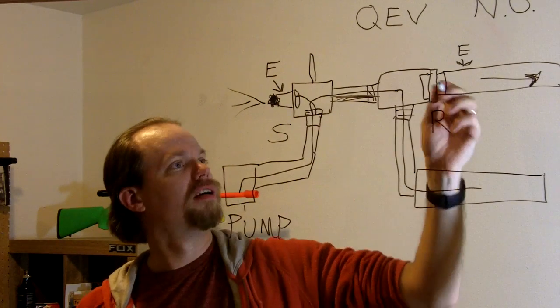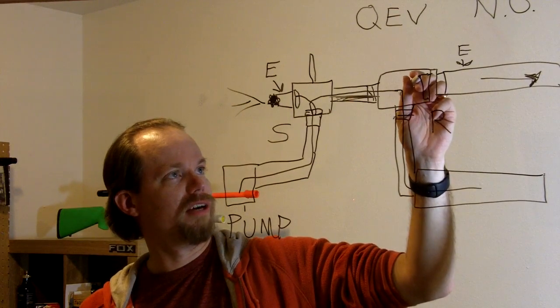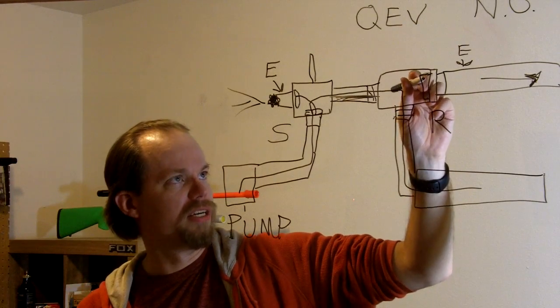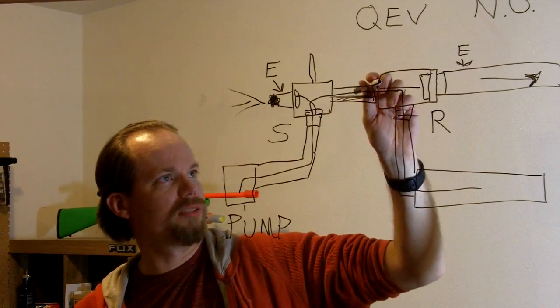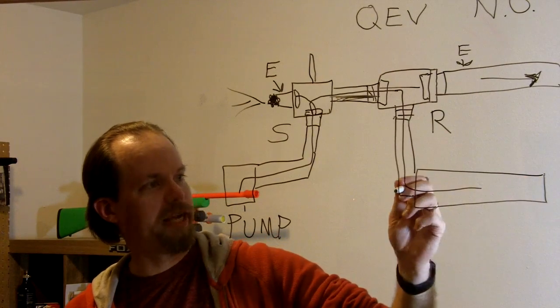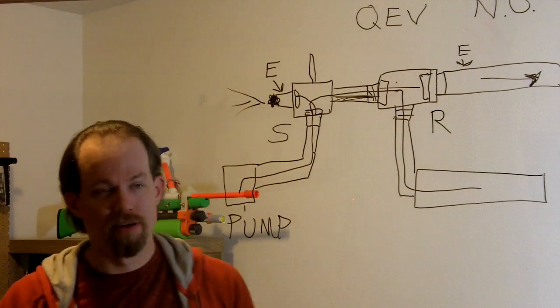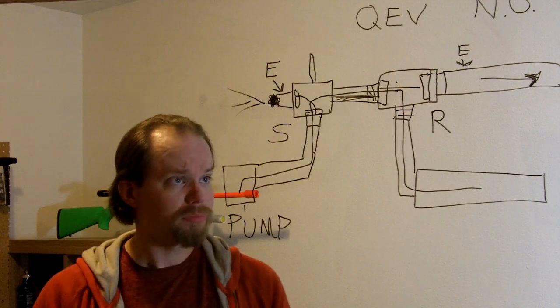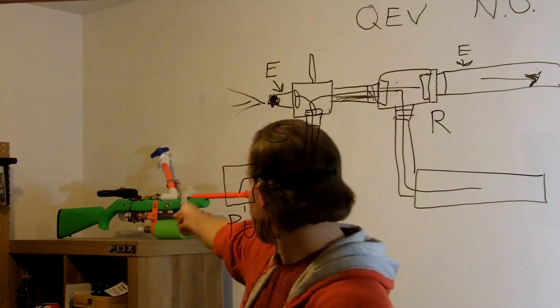Well when that happens, when this pressure drops, this biased shuttle valve, AKA QEV, slams closed this way and blocks this side off, allowing all your air from your tank to go up and out. And that all happens that quickly.